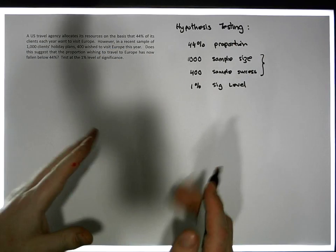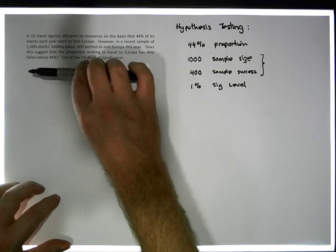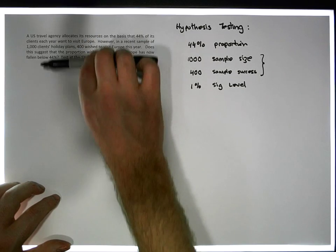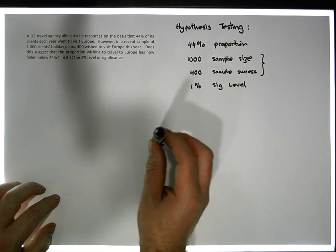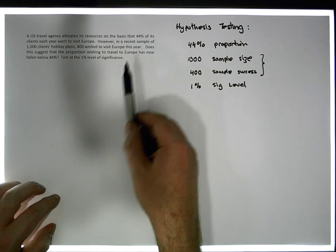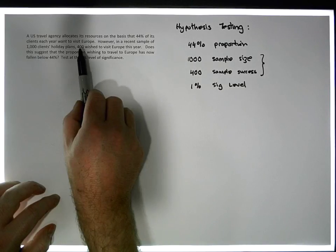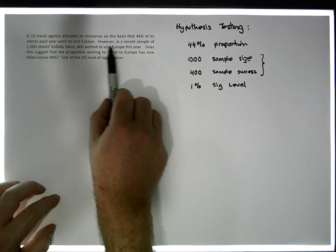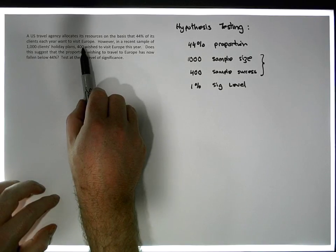So actually, in this particular test, we haven't been given any averages, any mean values, any standard deviation values. All we've been given is effectively frequencies: how many clients there were, how many of them clients satisfied a particular condition, wish to travel to Europe. That's all we've been given.